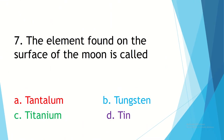Question 7. The element found on the surface of the moon is called — Option A, tantalum. Option B, tungsten. Option C, titanium. Option D, tin. Your time starts now.